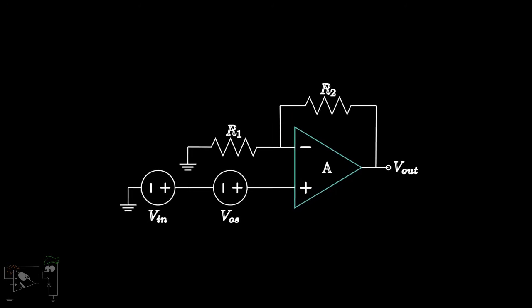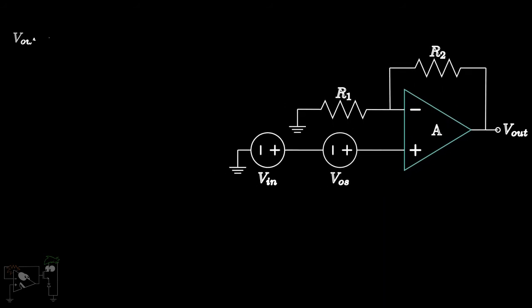Hence, the output becomes 1 plus R2 by R1, into VIN plus VOS.